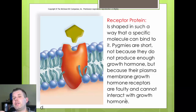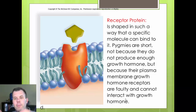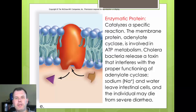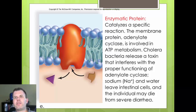A receptor protein binds molecules on the outside and tells the cell to do something. Hormones or other chemical signals bind to the cell saying, 'hey cell, you need to make something,' and the cell responds by producing that protein or substance. Enzymatic proteins help make reactions go faster and more efficiently - like a power tool of the cell, speeding up the work. They drive reactions so that things are made inside the cell.